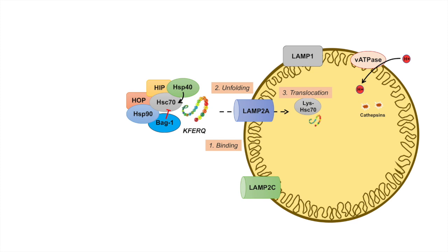The translocation through the LAMP2A receptor is the rate-limiting step of CMA. Because it is rate-limiting, LAMP2A is regulated by being stored within the lysosome. When CMA is not activated, the subunits of the LAMP2A receptor are located in a cholesterol-rich domain within the lysosome and are degraded by cathepsin A. When CMA is activated by prolonged starvation or cellular stress, these LAMP2A subunits translocate to the lysosomal membrane with the help of lysosomal HSC70 and multimerize to form the LAMP2A receptor.